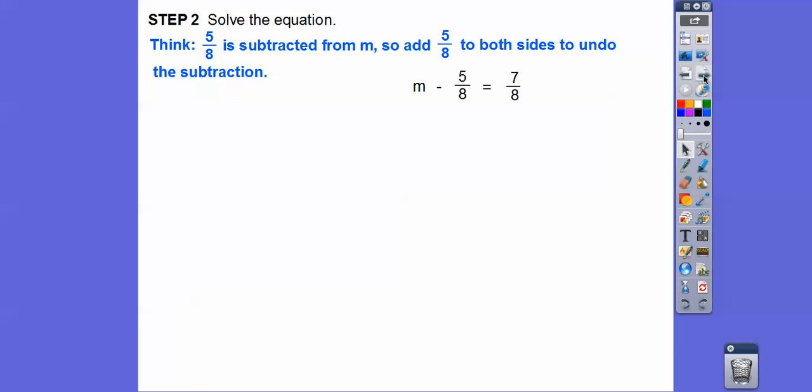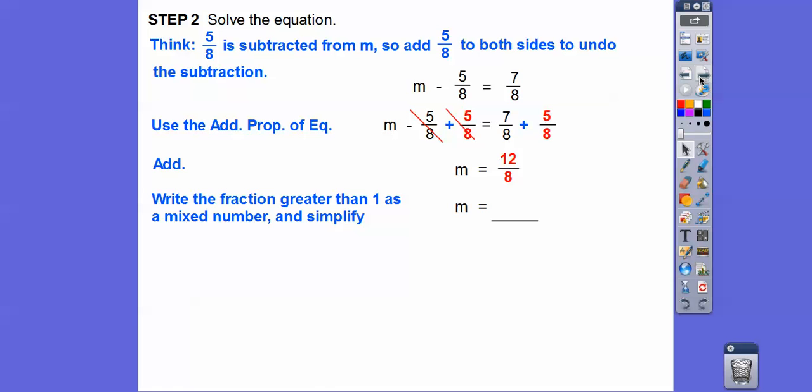Let's solve that. 5/8 is subtracted from m, so to get rid of the minus 5/8, we're going to add 5/8 to both sides to undo that subtraction. Typically in my algebra class I write plus 5/8 underneath the minus 5/8 - it's easier to see it canceling out - but your textbook is writing it horizontally, and that's the same thing. The minus 5/8 and plus 5/8 cancel out, so we add 7/8 plus 5/8. Just add the numerators: that gives us 12/8. We'll write this fraction greater than 1 as a mixed number and simplify.